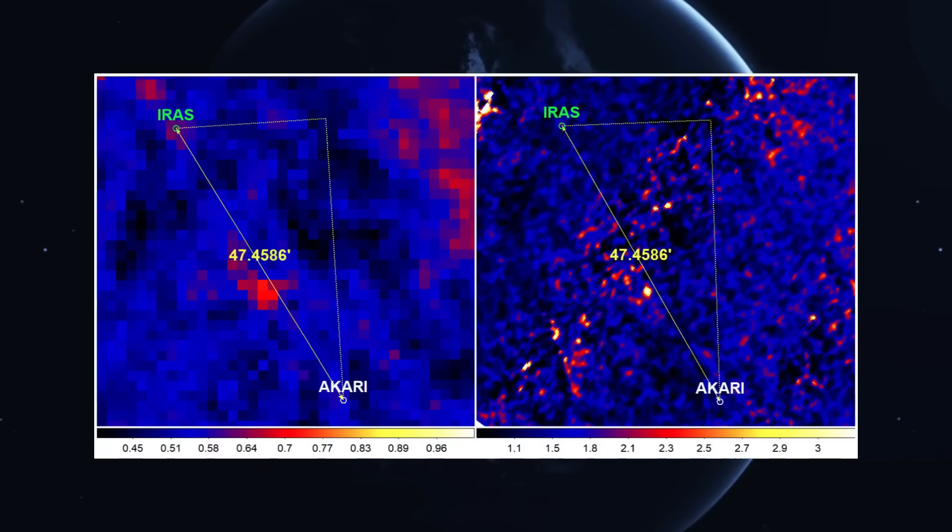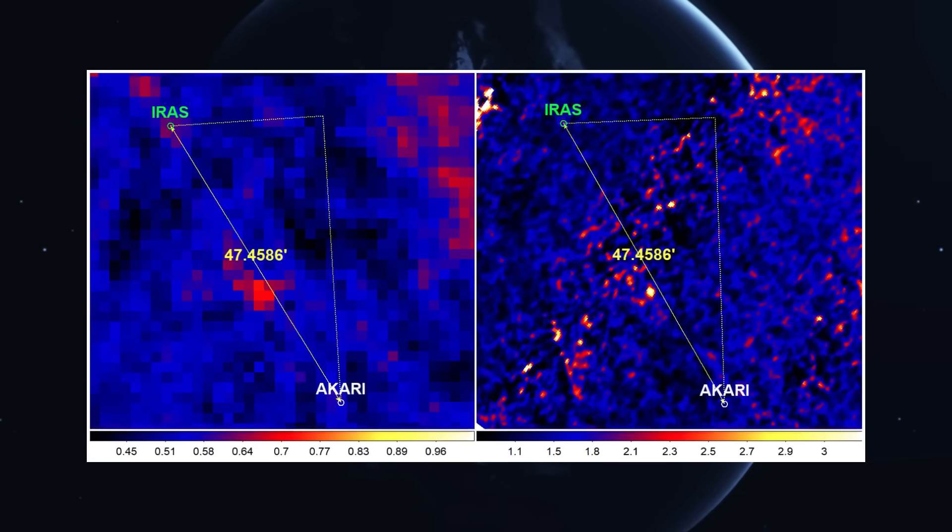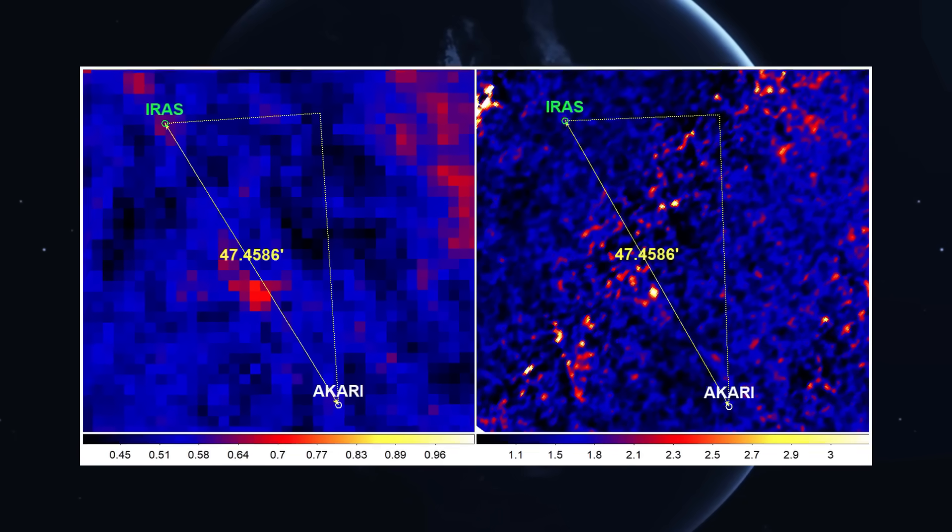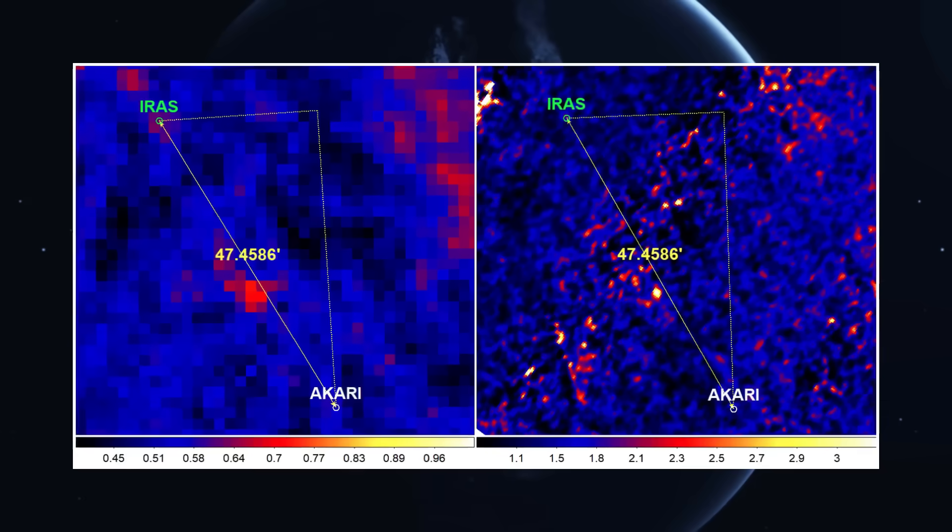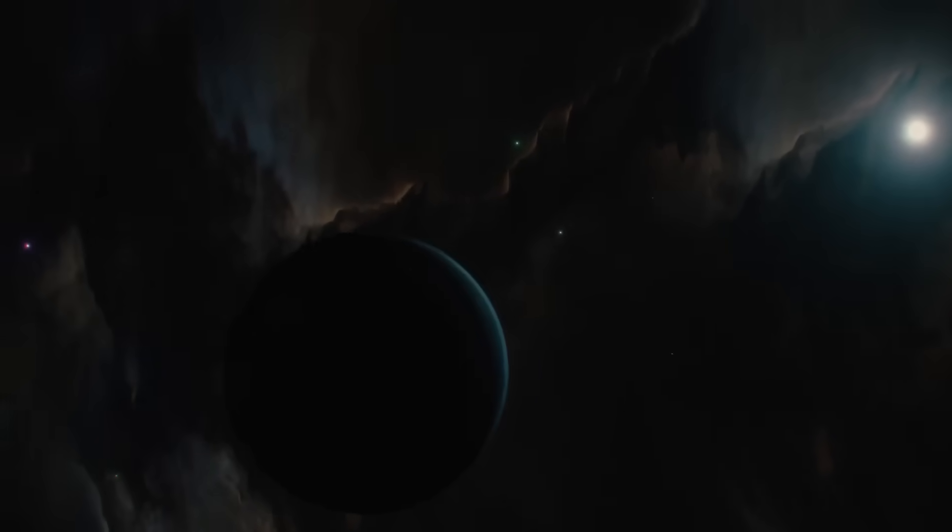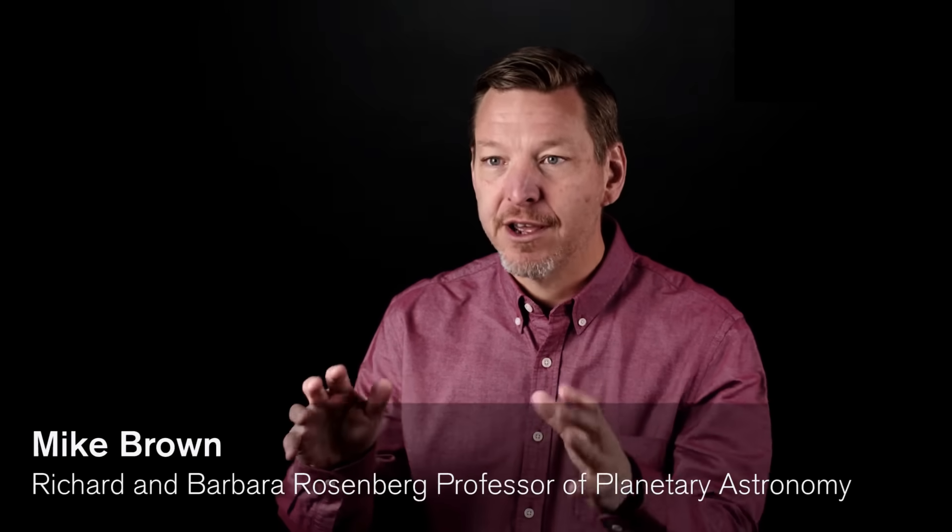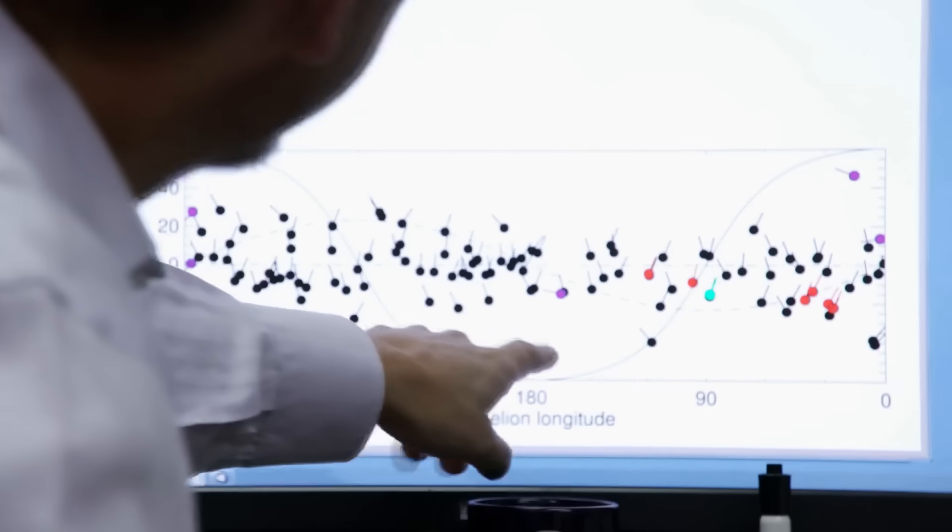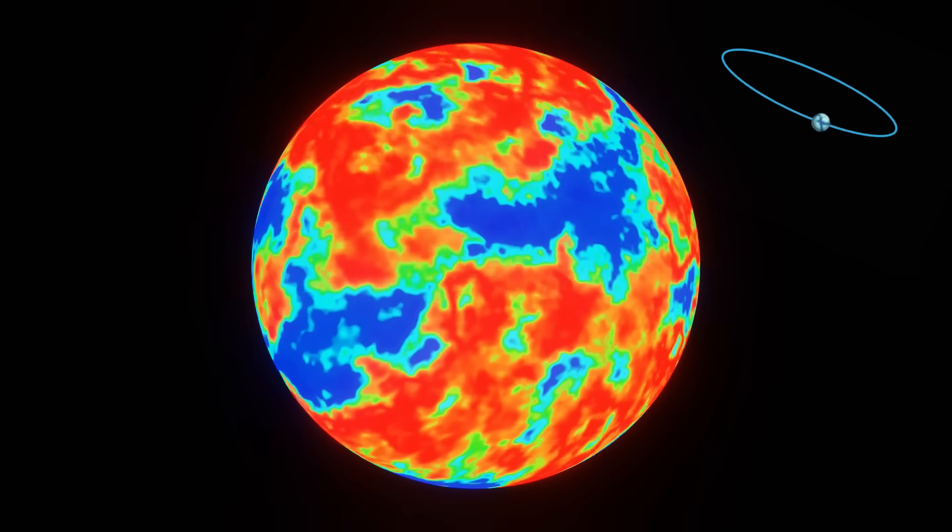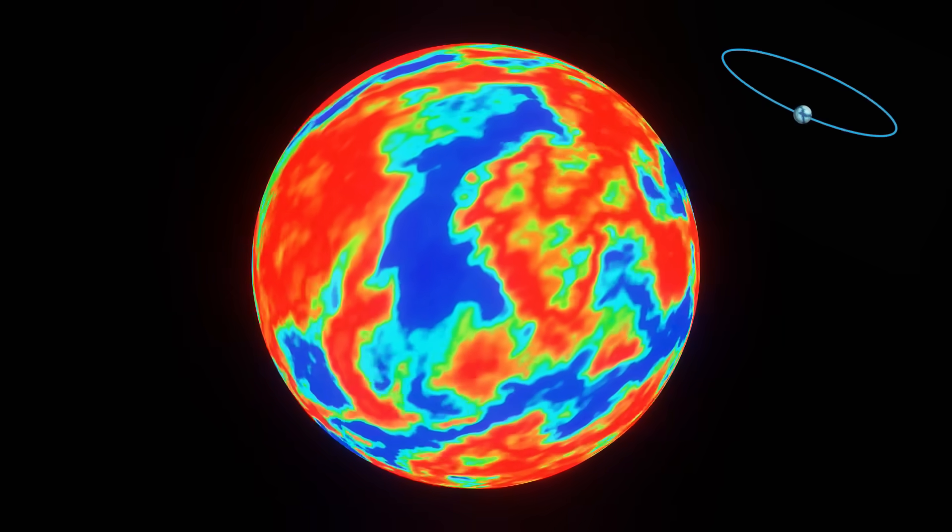So it's possible, even likely, that if this object is real and still glowing faintly, we'll see it again. But not everyone is convinced. Mike Brown, who helped propose the Planet 9 theory, took a look at the data himself. And while he doesn't rule it out entirely, he's skeptical, because the orbit of this candidate object doesn't line up.